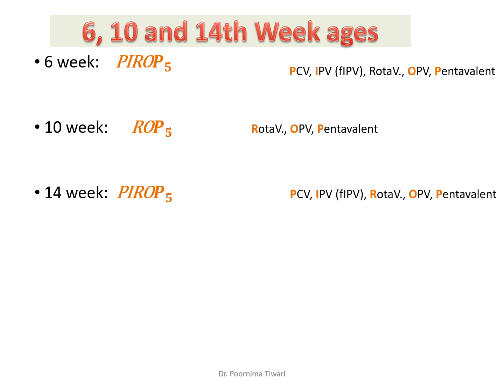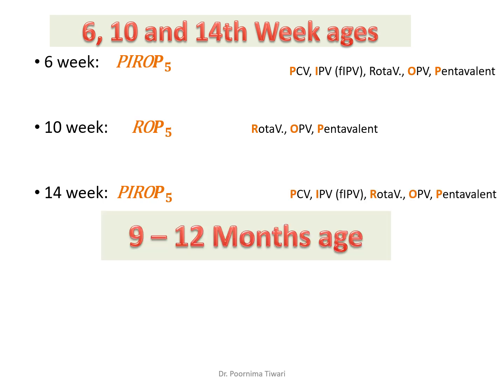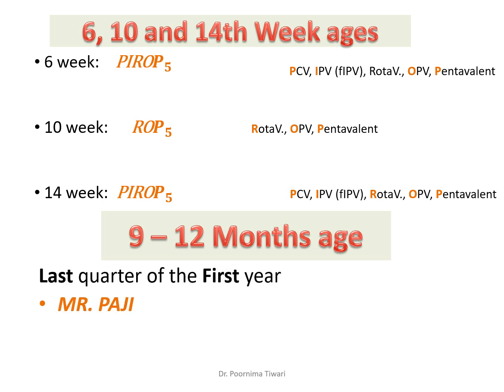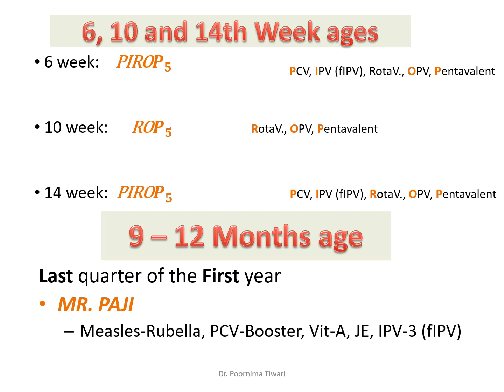At 14 weeks, 'Period of 5' is given again — the same vaccines as at 6 weeks. At 9 to 12 months, the child is completing the first year of life. The mnemonic is 'Mr. PAJI': MR for Measles-Rubella, P for PCV booster, A for Vitamin A, J for JE (in selective districts only), and I for IPV third dose.